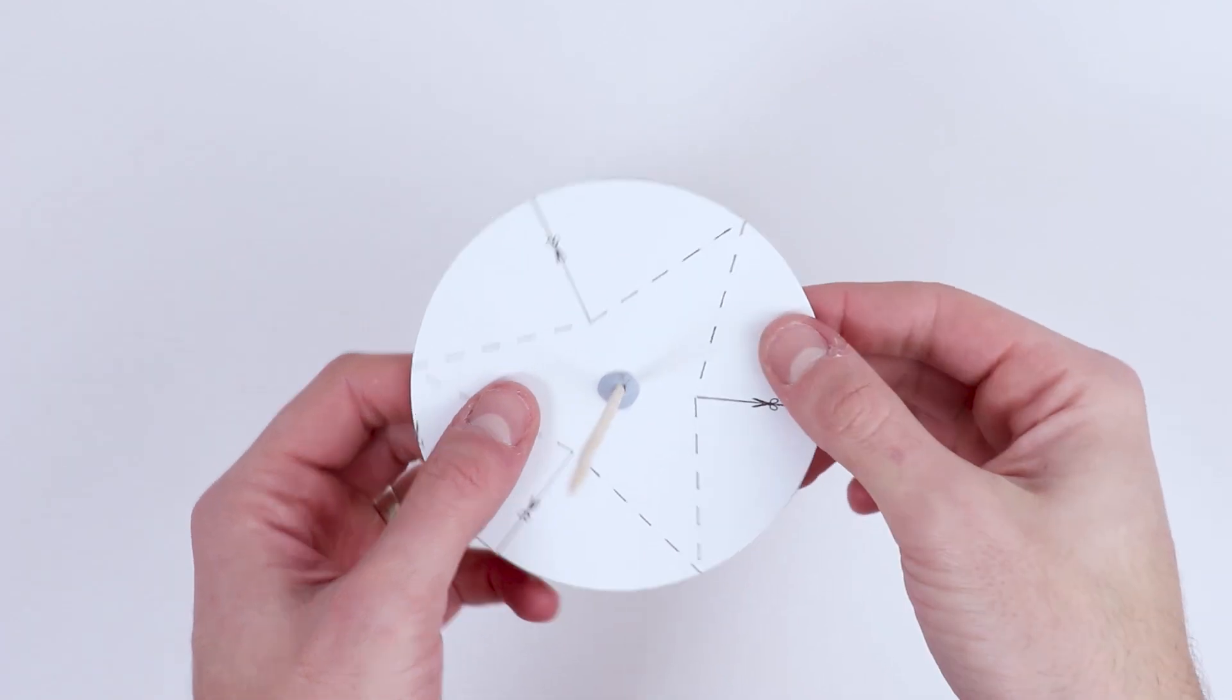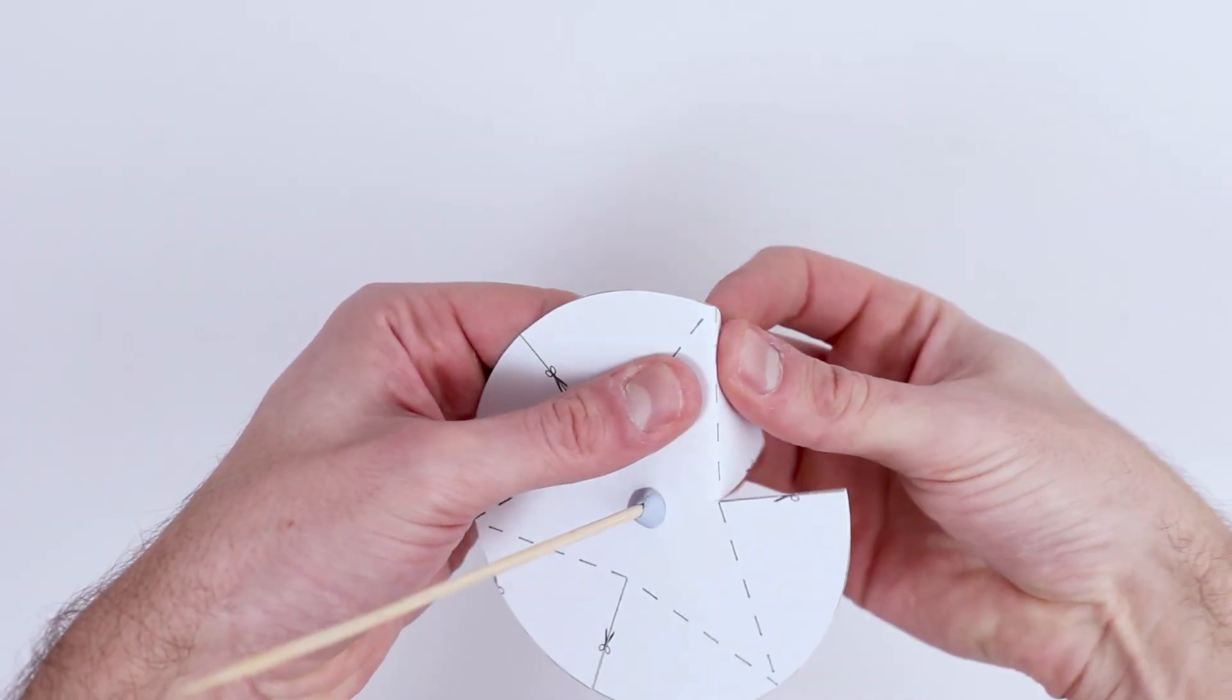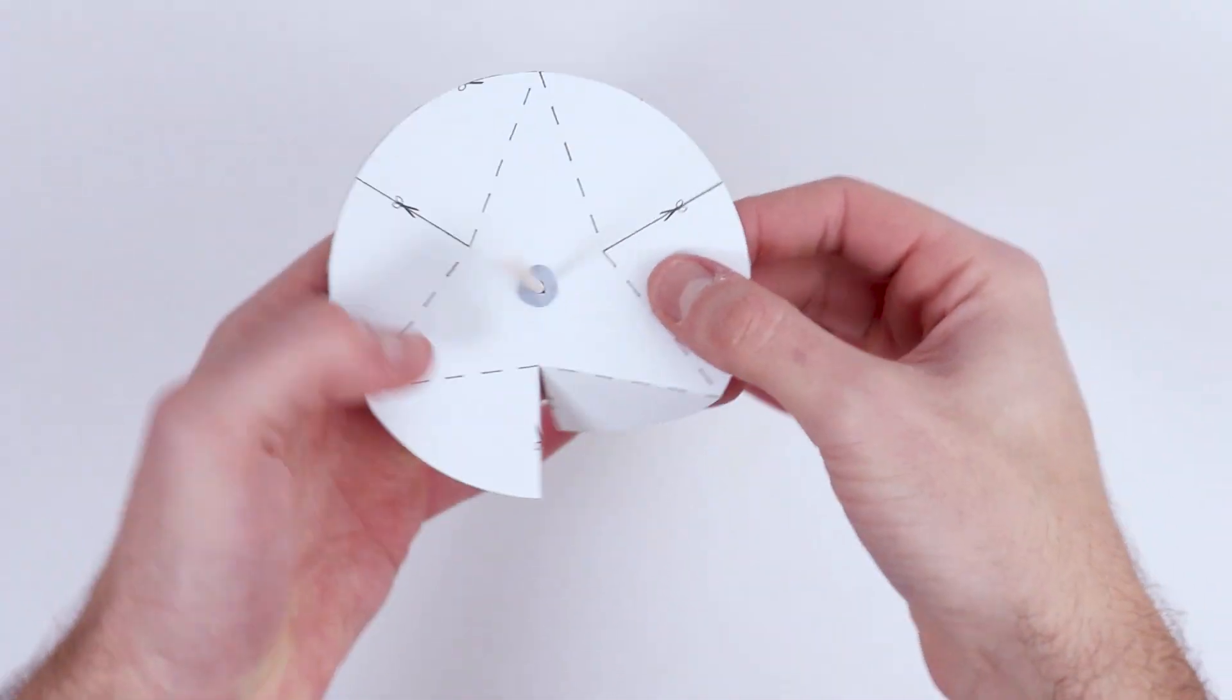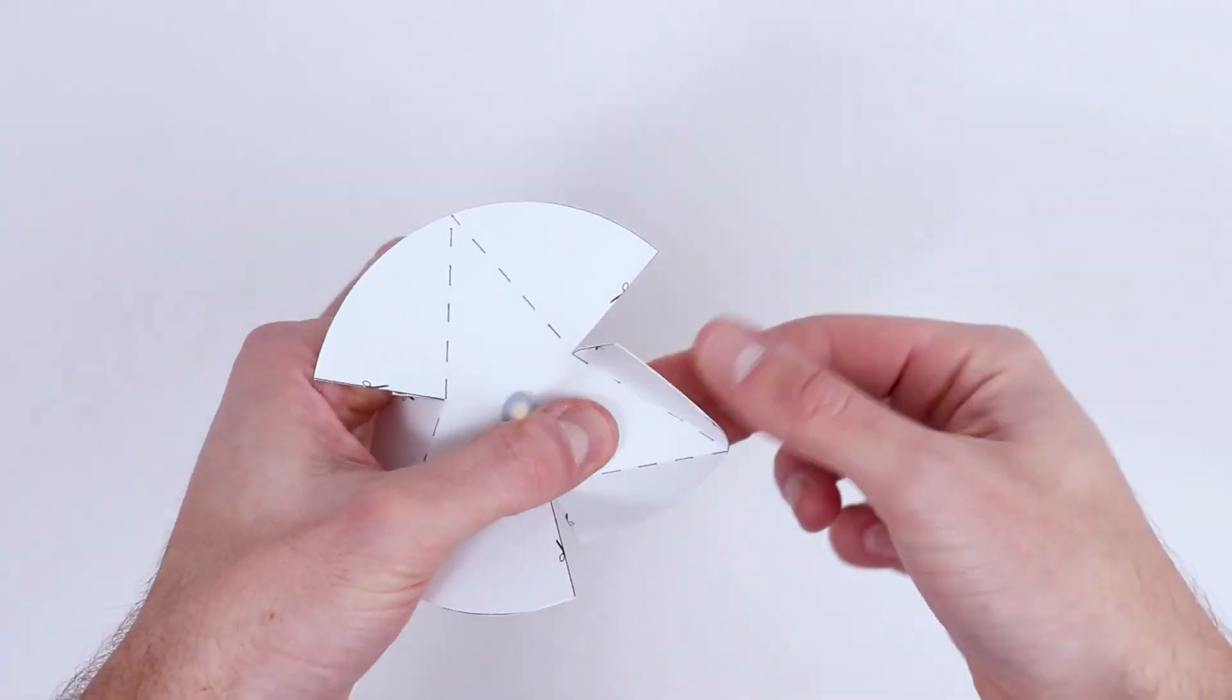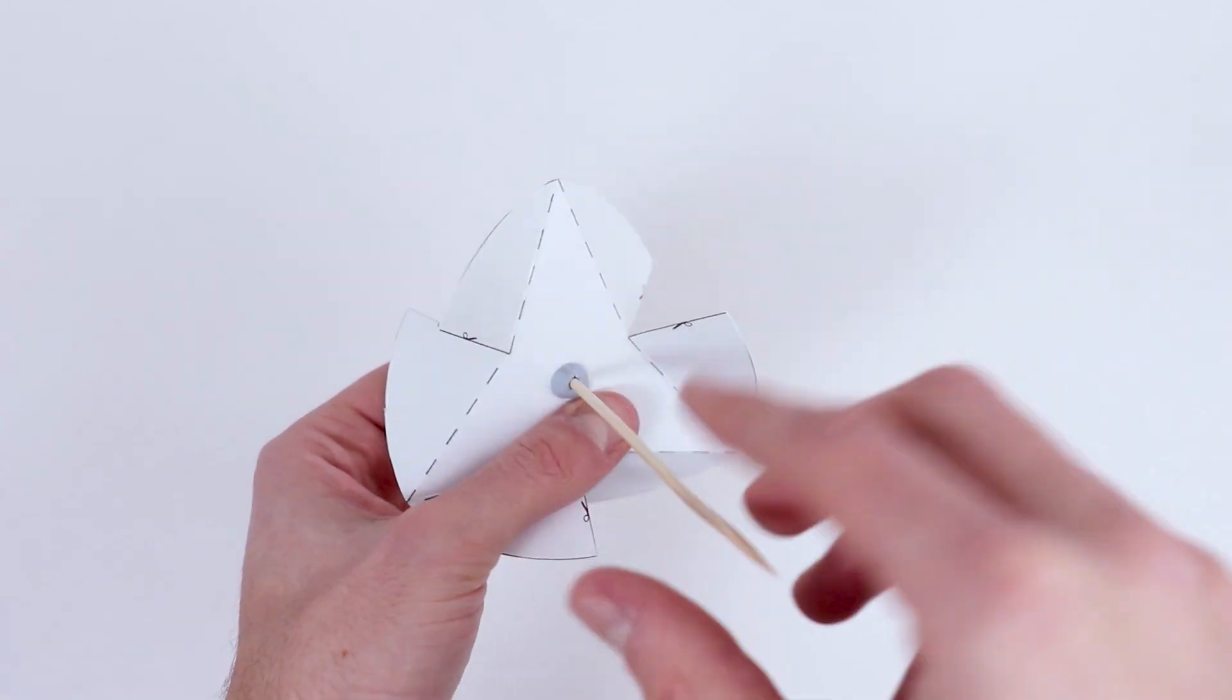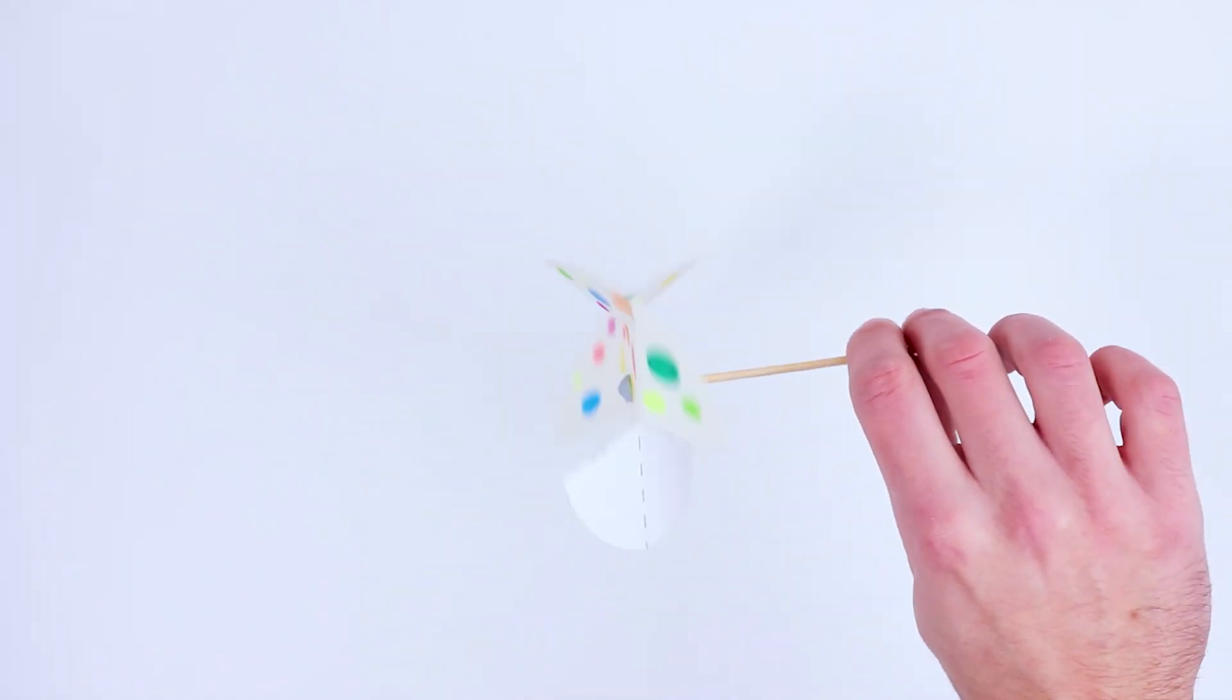And finally, to finish off this component of the windmill, fold along the score lines you made earlier, alternating both up then down to make the propeller on the windmill. This is what's going to cause it to spin as the heat rises and passes through it.